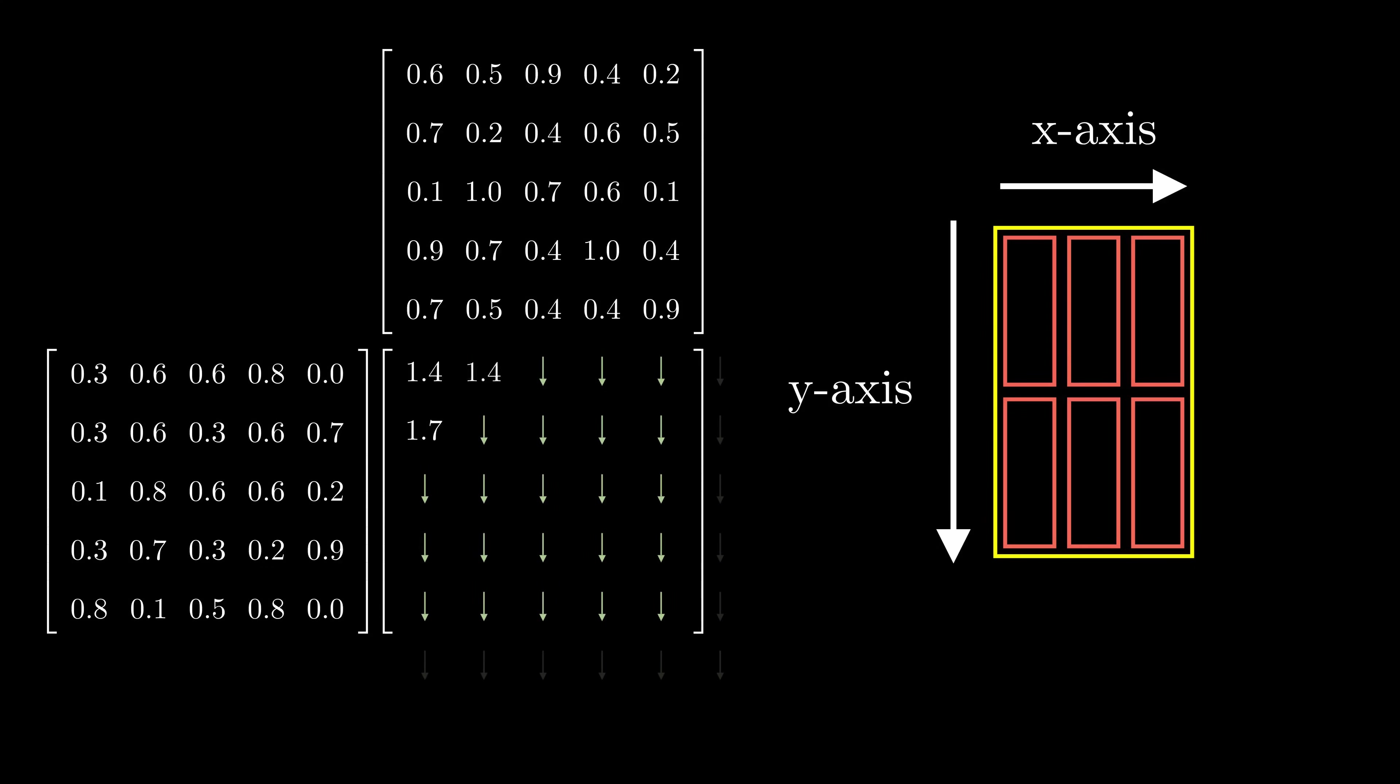Now, each thread fetches a row and a column of input matrices, performs a dot product, and stores the final result.